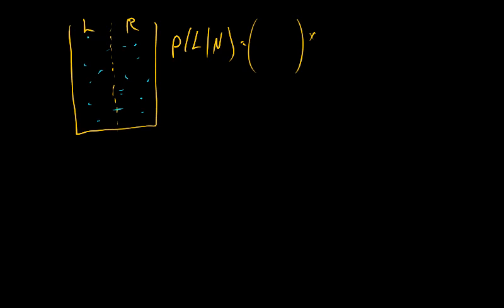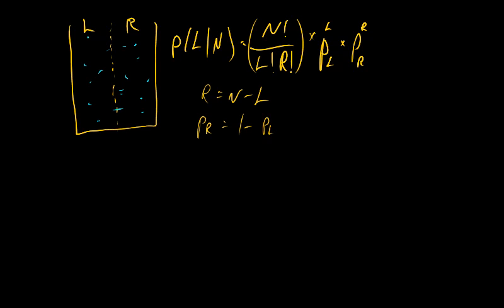In that sense, what we have is essentially the probability of one of the events, in this case the probability of being on the left, raised to the power of the number on the left, and then the probability of being on the right, raised to the number on the right. And then we have a counting term, which is n factorial over l factorial r factorial, which is the number of each one. This simplifies somewhat when we recognize that r is simply n minus l, and the probability of being on the right is just one minus the probability of being on the left.